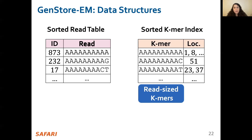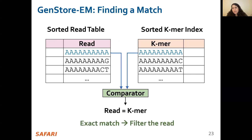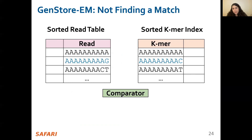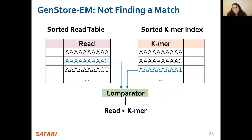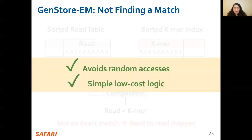Each data structure is sorted by read and K-mer in alphabetical order. We sequentially scan through these data structures in three different ways based on the comparison result of the current read and K-mer. First, when the current read and K-mer are identical, we record the read as an exactly matching read that can be filtered from further readmapping. Then we move to the next element in both structures. If the read is alphabetically larger than the K-mer, we conclude that K-mer does not match any read and go to the next element in the index. If the K-mer is alphabetically larger than the read, we conclude that the read does not match any K-mer in the index and needs to be sent for full readmapping to the host system, then move to the next element in the sorted read table. Using this technique, GenStore EM avoids random accesses and performs filtering using only simple low-cost logic.